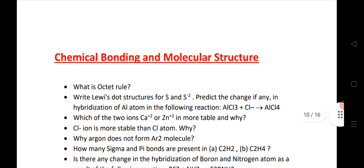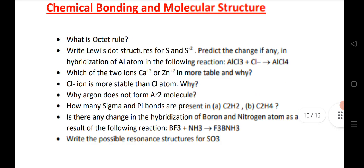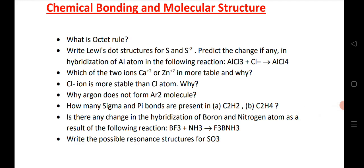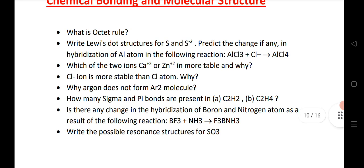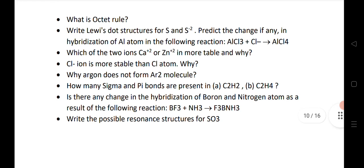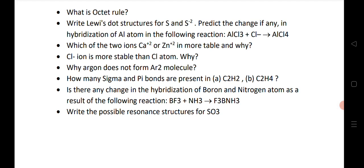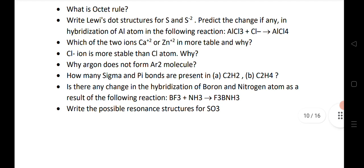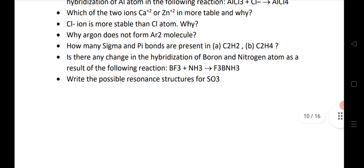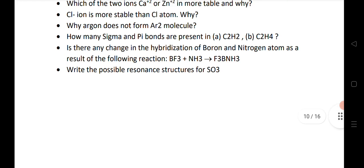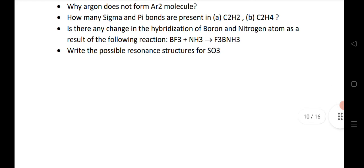Next is chemical bonding and molecular structure. Again this chapter is also important. We are getting VSAQs, octet rule, Lewis dot structure for Ca2+ and Zn2+. Very important question, Cl- ion is more stable than Cl atom. Sigma bond, pi bond calculation. We know how to calculate sigma and pi bonds for single bond, double bond we have one pi bond and one sigma bond. Is there any change in hybridization of boron and nitrogen? What is the possible resonance structure for SO3?